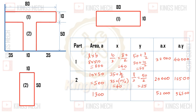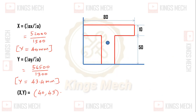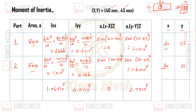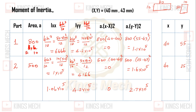Now for the moment of inertia, we have IXX and IYY to compute. The formula for IXX is BH cube by 12 for a rectangle, and IYY is HB cube divided by 12. For part 1 with dimensions 80 by 10: BH cube by 12 gives 80 into 10 cube by 12, and HB cube by 12 gives 10 into 80 cube by 12. Next, A into (small x minus capital X) whole square is applied.